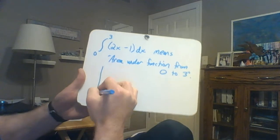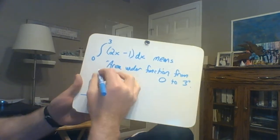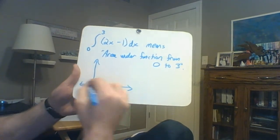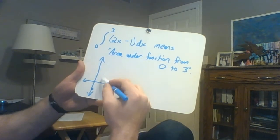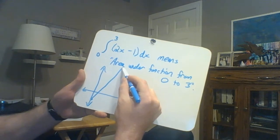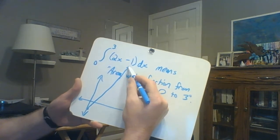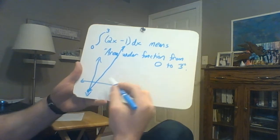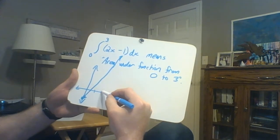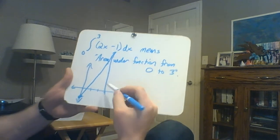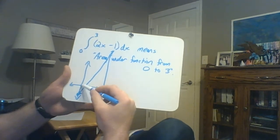So if we were to look at the graph of this function, 2x minus 1, y-intercept of negative 1, slope of up 2 over 1, you know, something like this, and then from 0 to 1 to 3, so there's my boundaries.